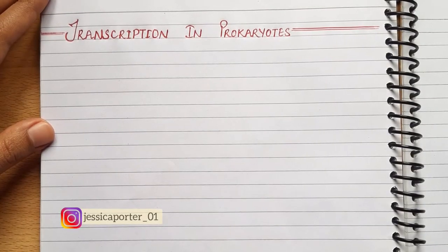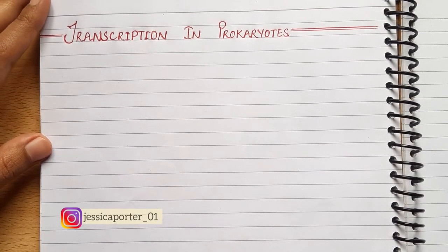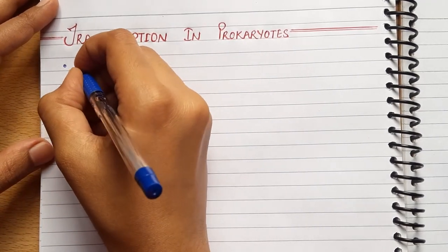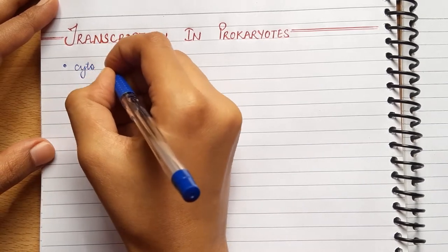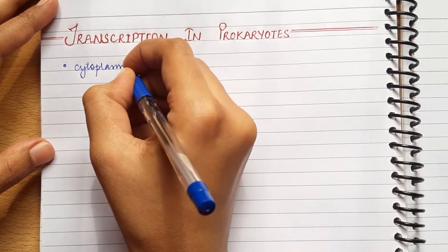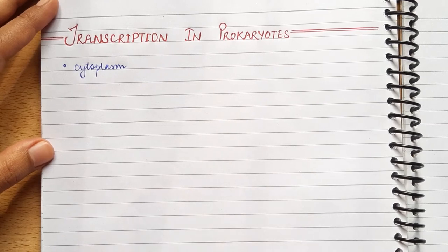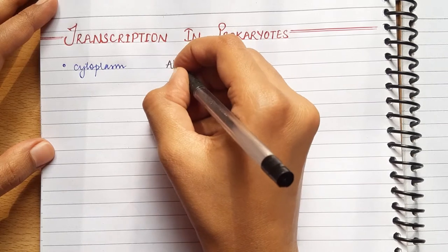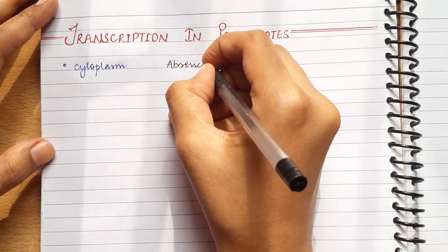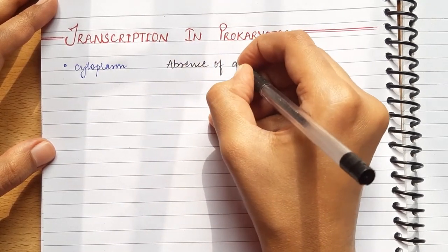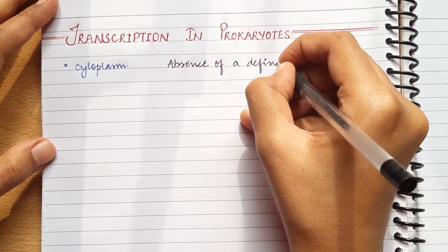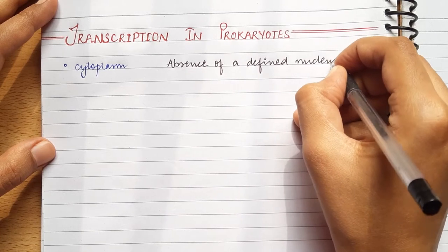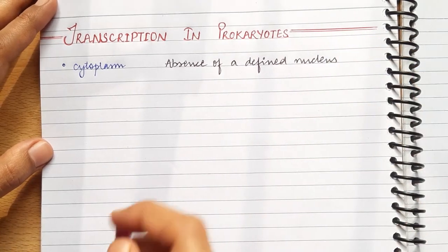Let's get started. The basic steps in transcription in prokaryotes and eukaryotes are the same, but there are a few differences. For example, transcription in prokaryotes takes place in cytoplasm and in eukaryotes it occurs in nucleus. This is because prokaryotes do not have a defined nucleus. The nuclear membrane is absent and there is no clear distinction between the nucleus and cytoplasm. Therefore, transcription occurs in cytoplasm.